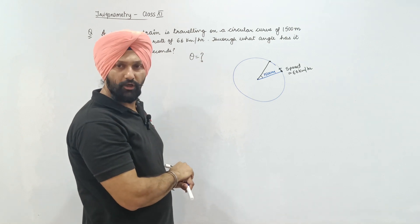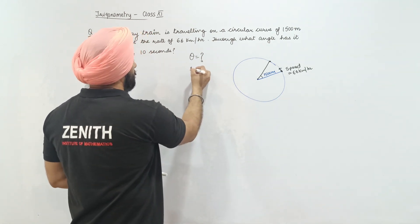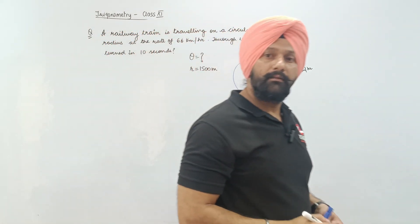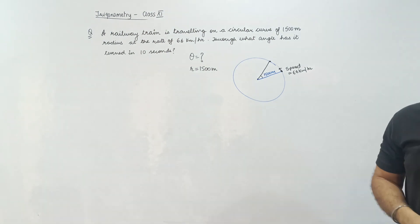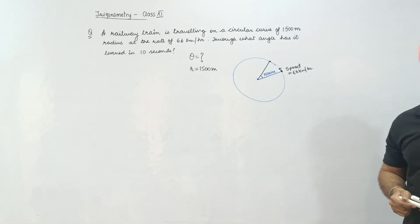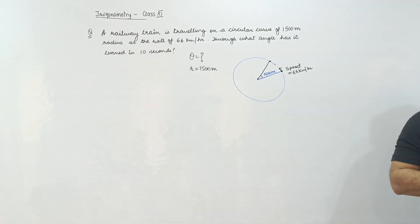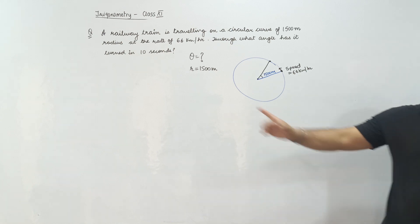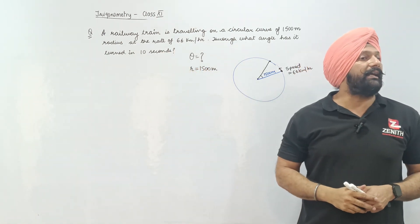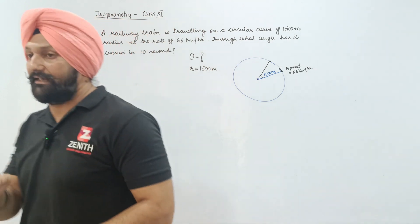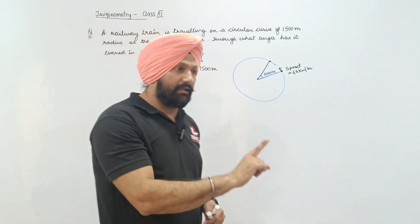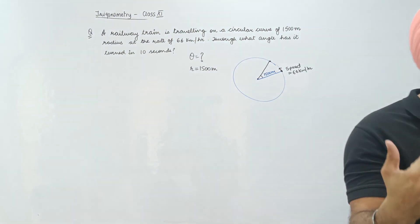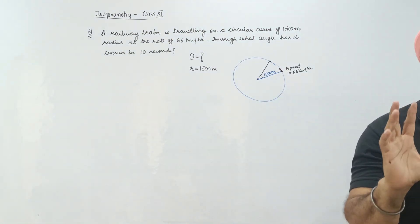The radius is 1500 meters and the length of arc — let's understand this. The speed is given, and I can convert that: how many meters has it covered in 10 seconds?